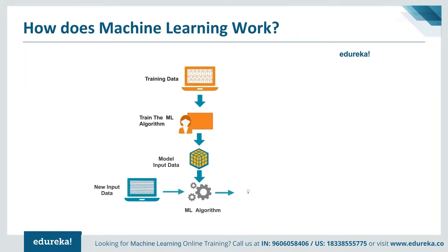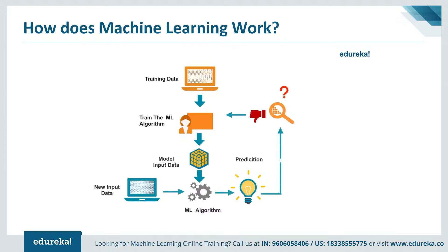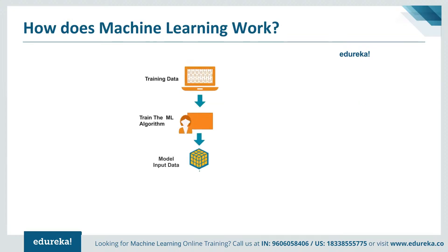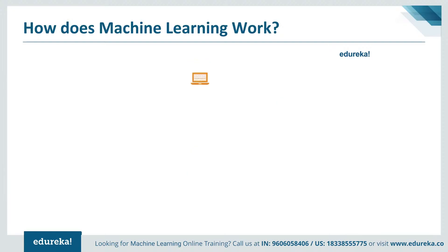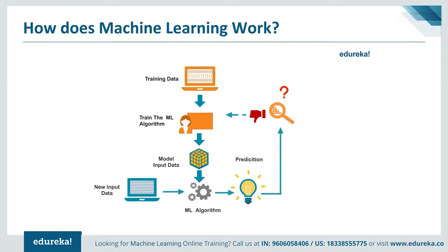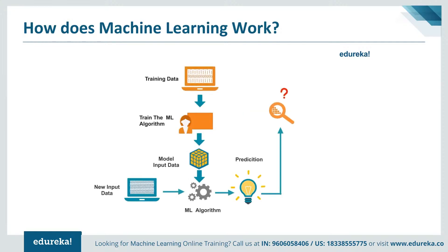Let's see in general how machine learning works. One approach is where the machine learning algorithm is trained using a labeled or unlabeled training dataset to produce a model. New input data is introduced to the algorithm and it makes predictions based on the model. The prediction is evaluated for accuracy, and if the accuracy is acceptable, the algorithm is deployed. If not, the algorithm is trained again with an augmented training dataset. This is just a high-level example, as there are many more factors and steps involved.